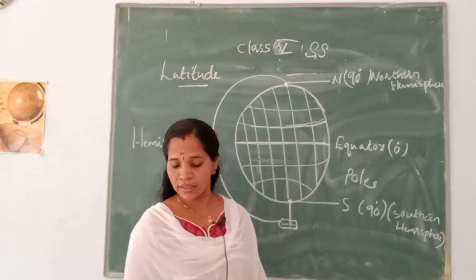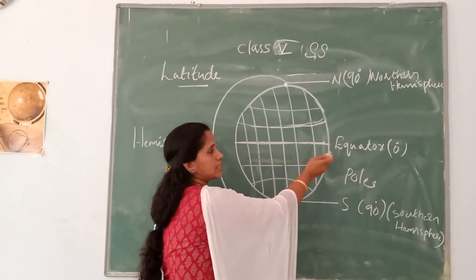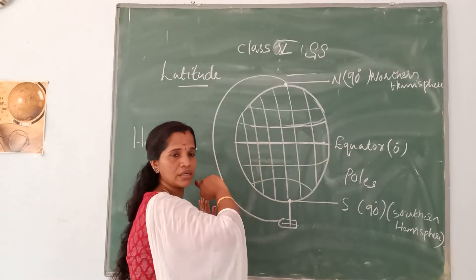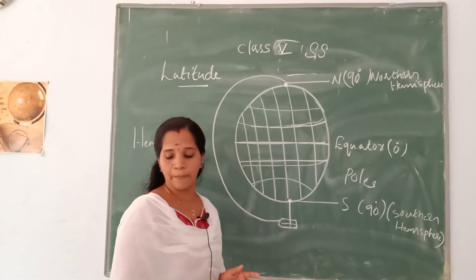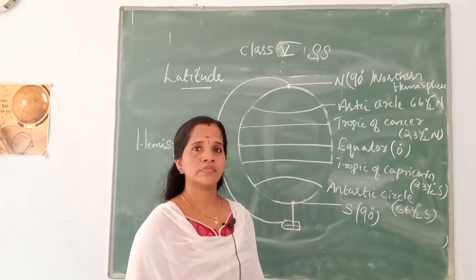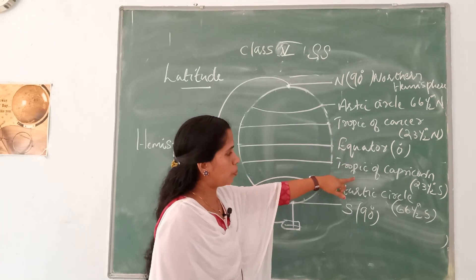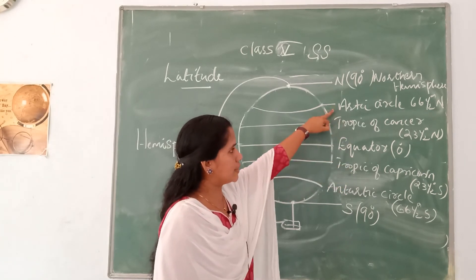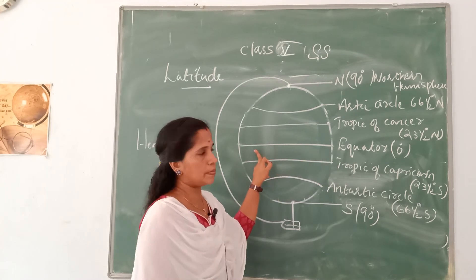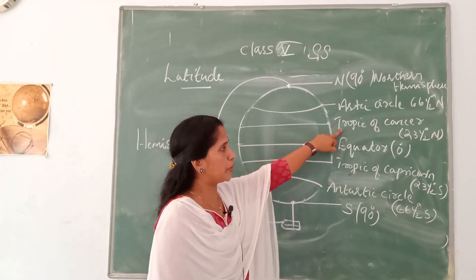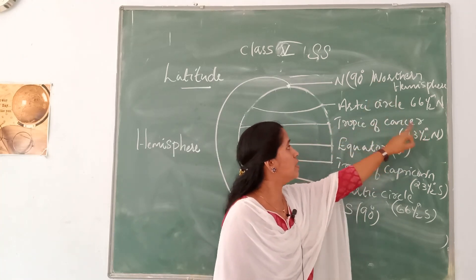There are four other important latitudes. The first one is the equator, which is an imaginary line. The next important latitudes are the Tropic of Cancer and the Tropic of Capricorn. The four important latitudes are: the Tropic of Cancer, the Tropic of Capricorn, the Arctic Circle, and the Antarctic Circle. The Tropic of Cancer is at 23.5 degrees north.